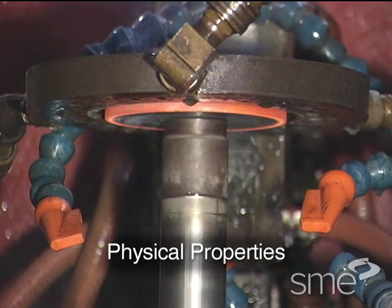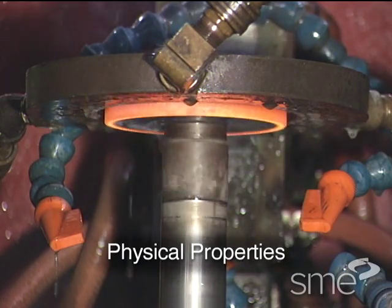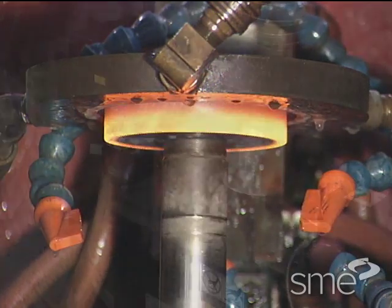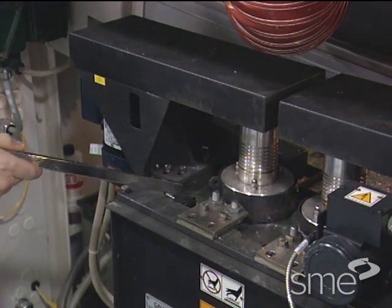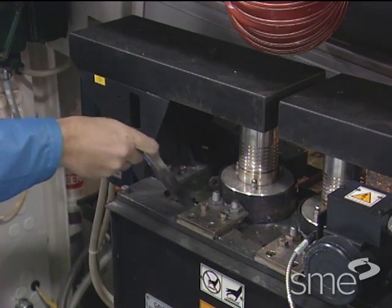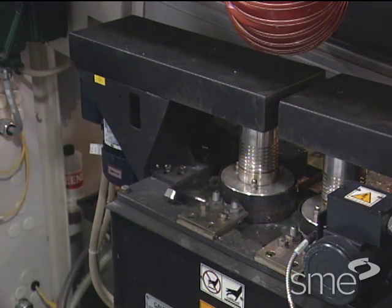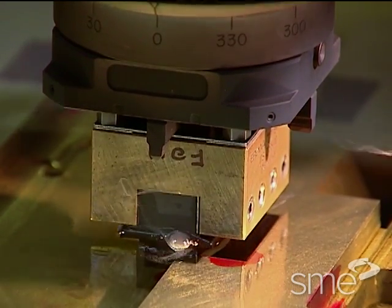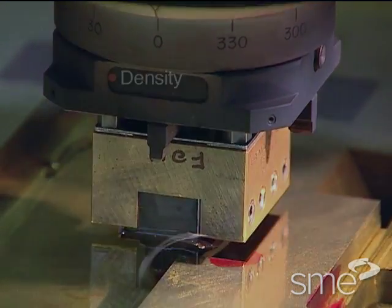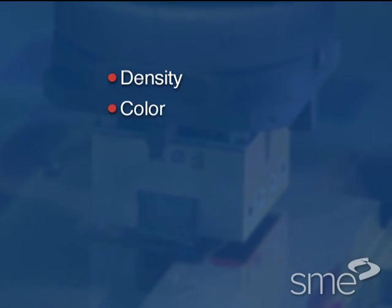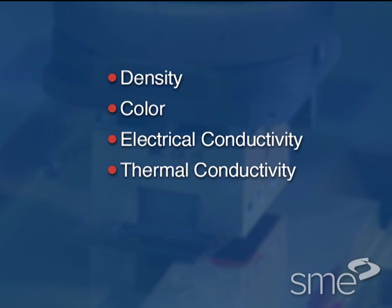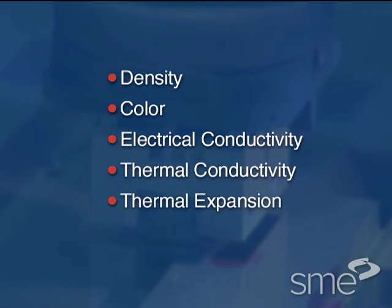The physical properties of a material control how the material will react under certain conditions. Physical properties are natural in the material and cannot be permanently altered without changing the composition of the material itself. These physical properties include density, color, electrical conductivity, thermal conductivity, thermal expansion, and melting point.